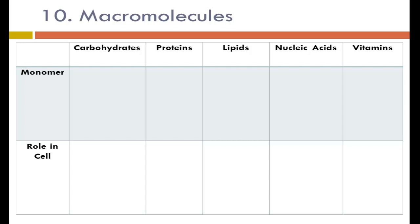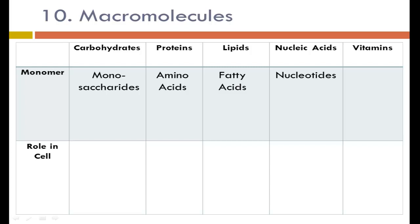The monomer for carbohydrates is monosaccharides. For proteins, the monomer is amino acids. For lipids, fatty acids (and glycerol). For nucleic acids, the monomer is nucleotides. For nucleic acids specifically: DNA contains adenine, thymine, guanine, and cytosine. RNA contains adenine, uracil, guanine, and cytosine — so there is no thymine in RNA.